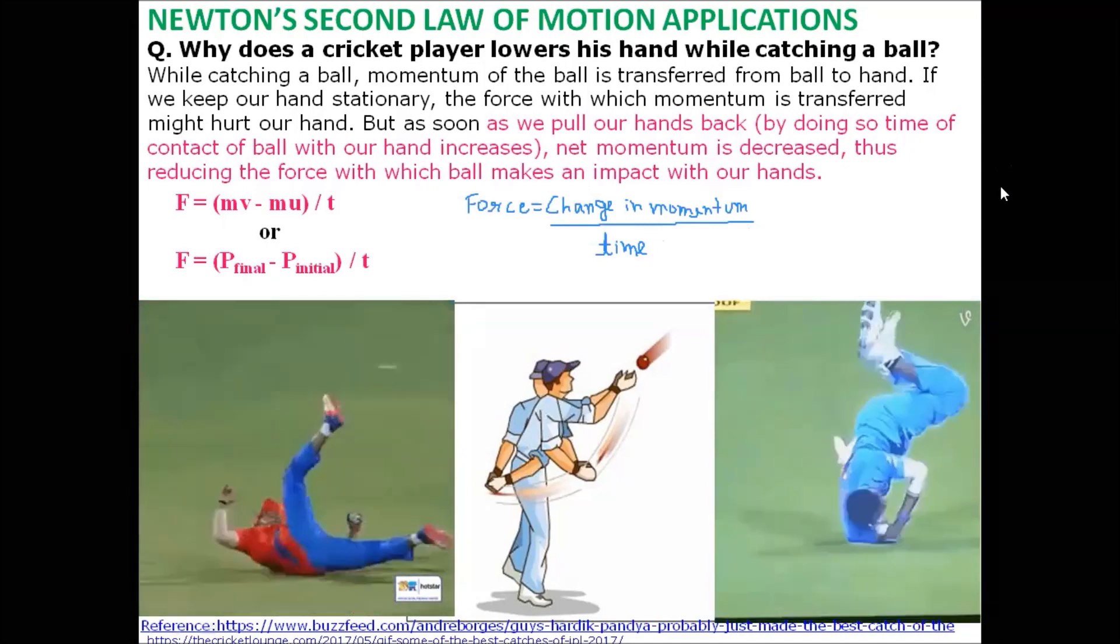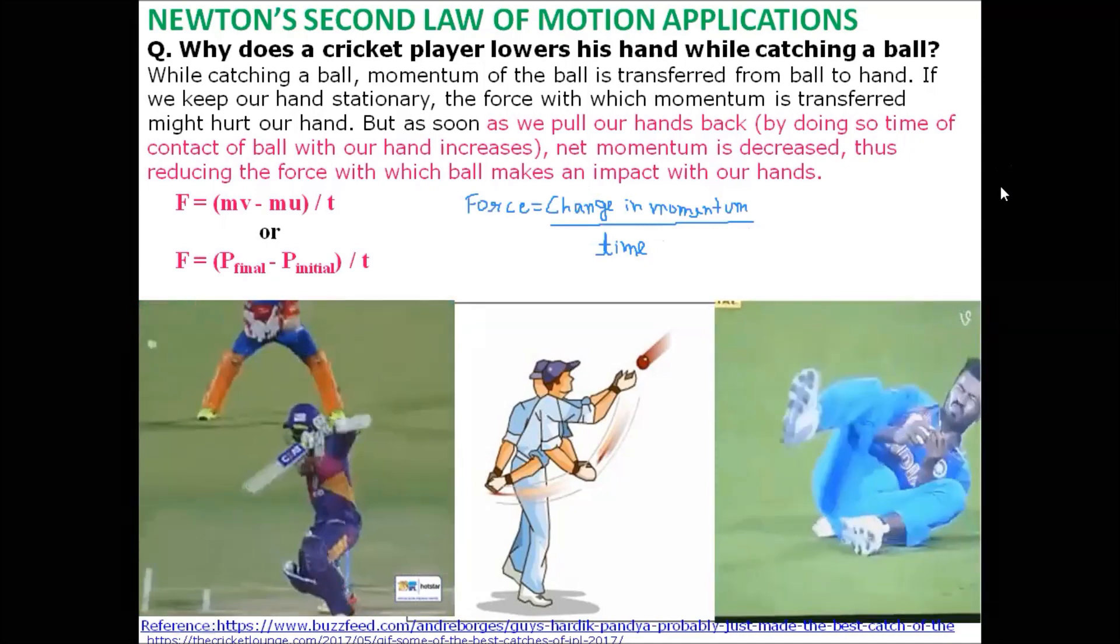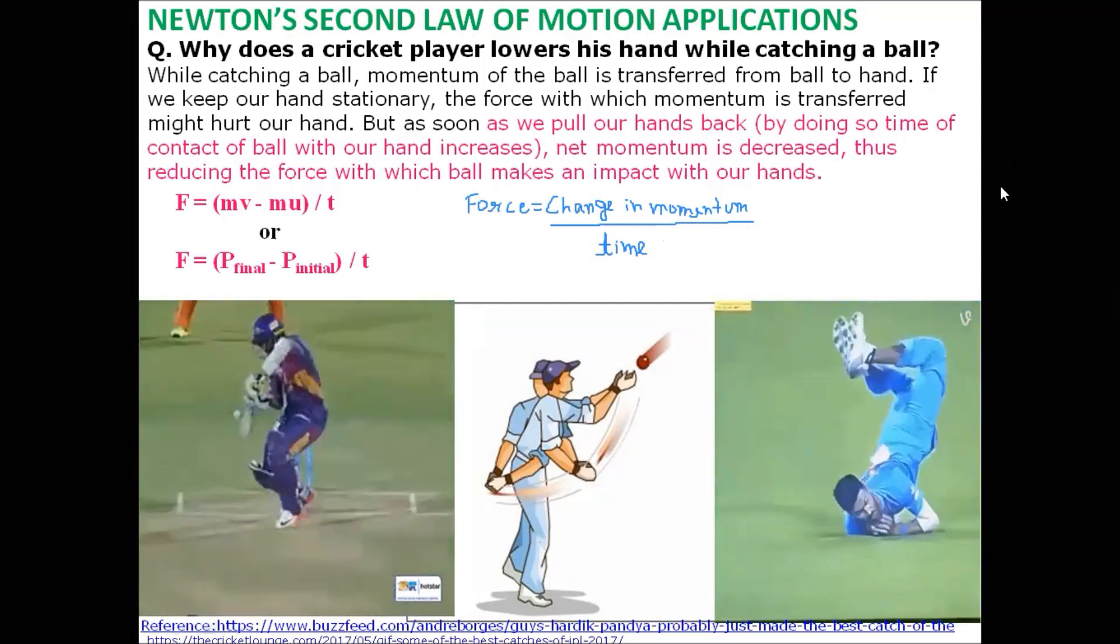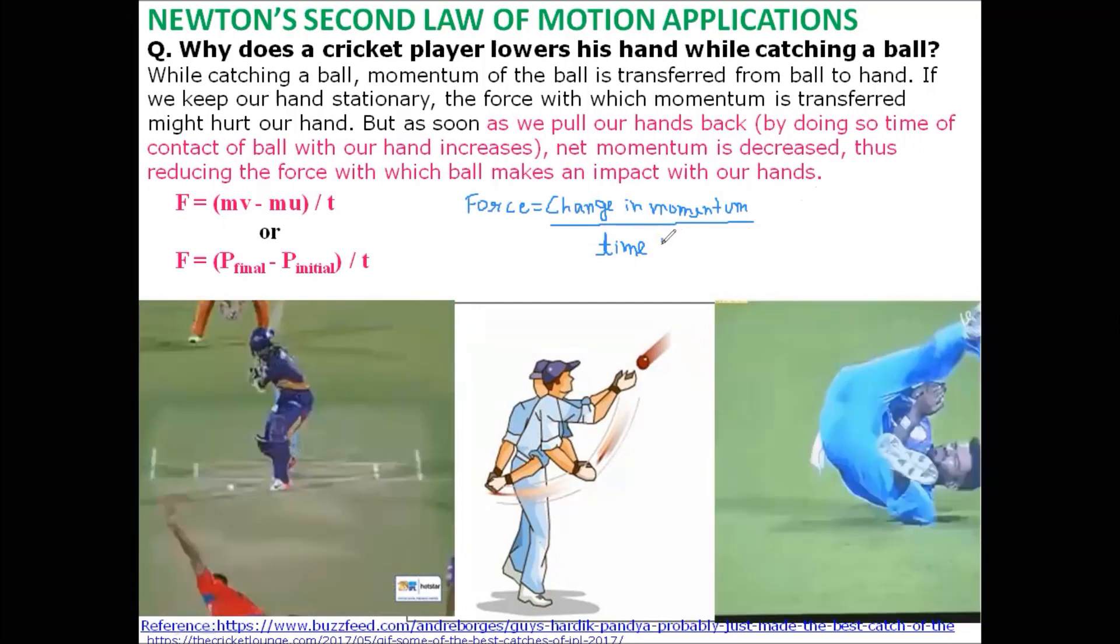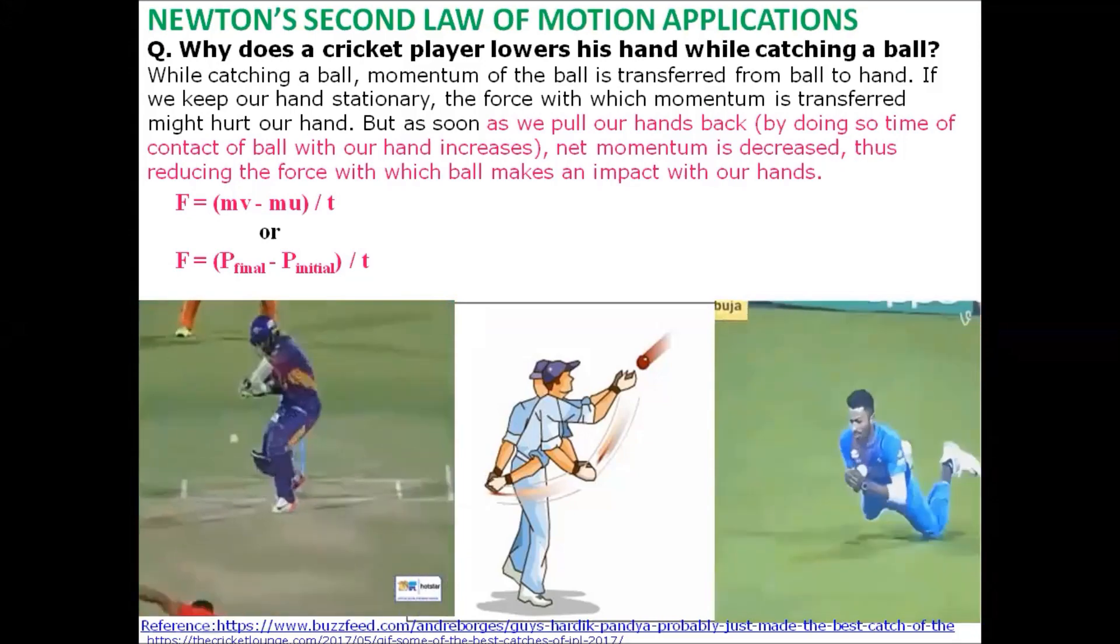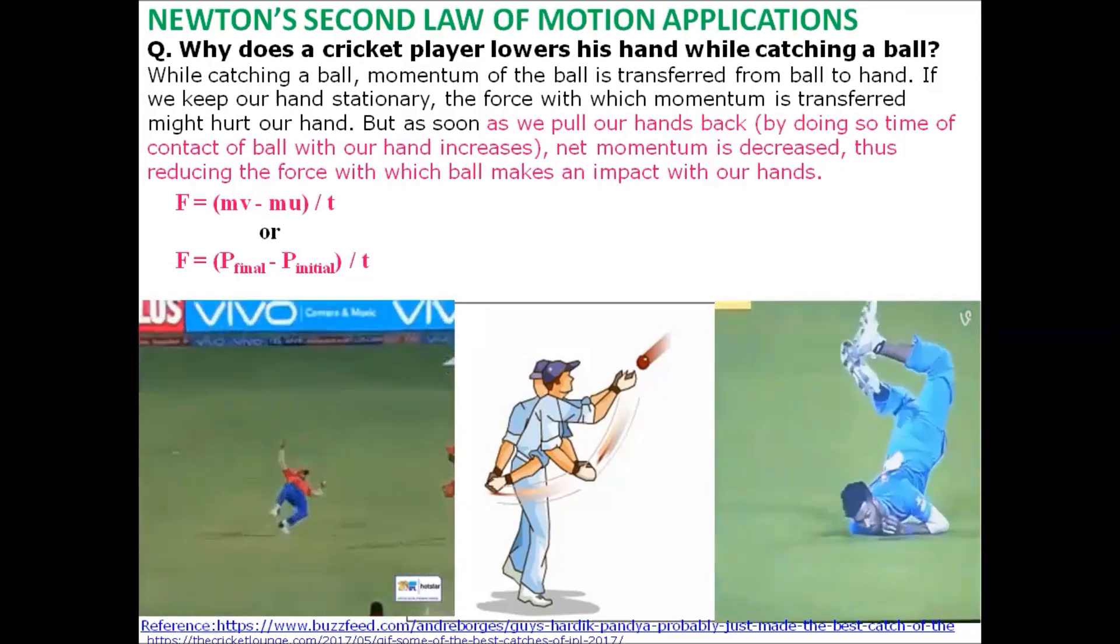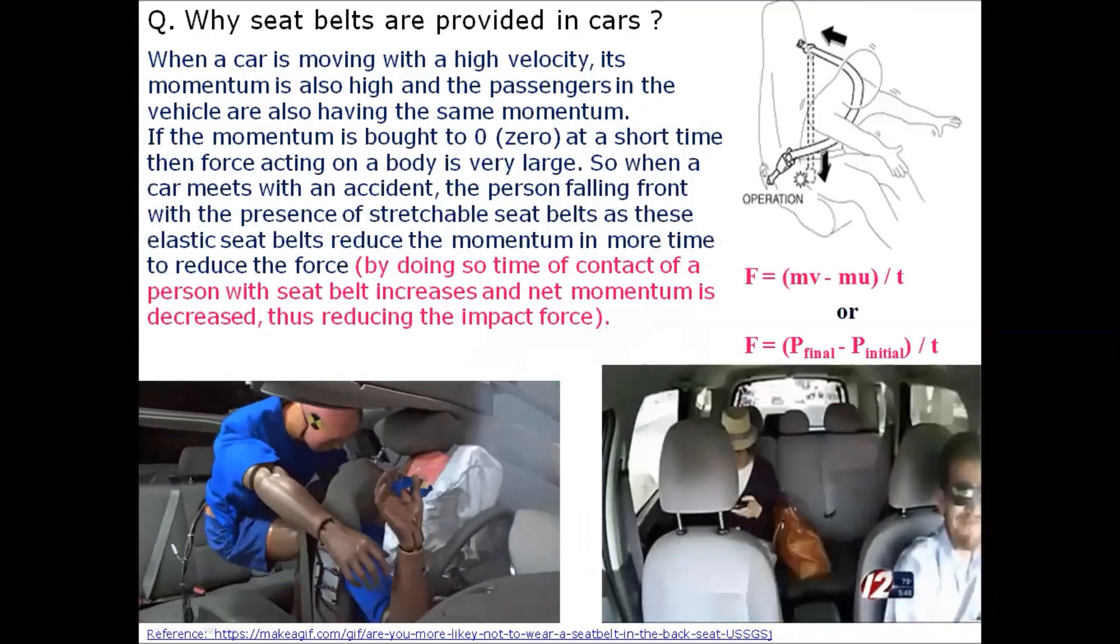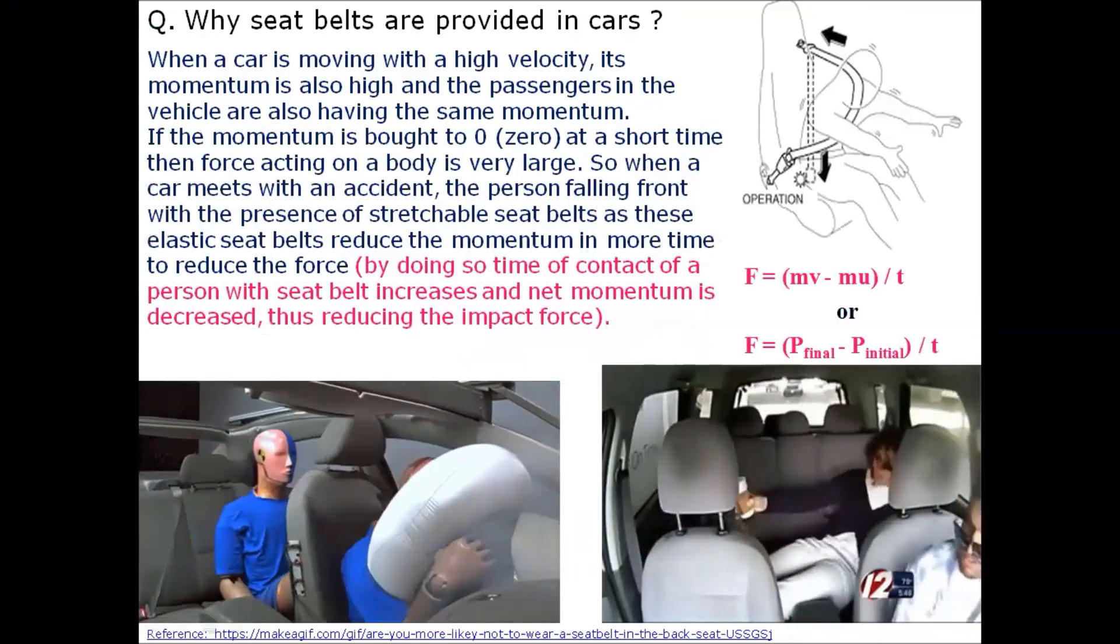From Newton's second law of motion, we know that force is given by change in momentum per unit time. From this relation we find that if we increase the time of contact, then the force transferred to the player's hand will be reduced, since momentum takes more time to drop from a larger value to zero.